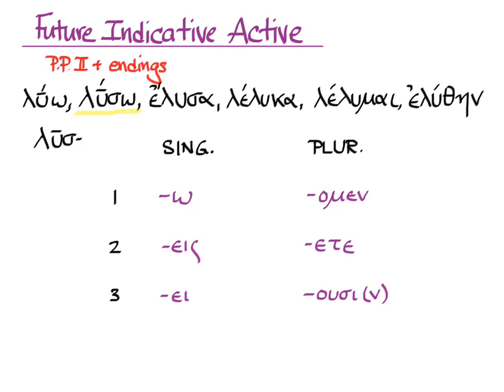Now look at those endings — you already know them: o, ace, a, omen, eta, usi. They are the same as the present indicative active endings. That's the good news. So the difference between future and present will only be the principle part, and you'll need to see that sigma in the middle of the word to know whether you're looking at a present or future verb. The accent on the future indicative active is recessive.